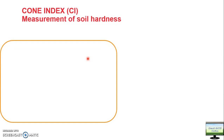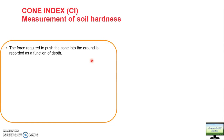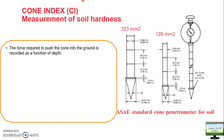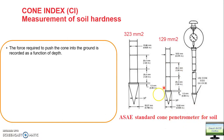Now we will move ahead to some extra concepts. The first concept is cone index. Cone index is basically the measurement of soil hardness — if cone index is less, the soil is soft; if it is high, the soil is hard. It is the force required to push a cone into the ground and is a function of depth. The instrument used is called a cone penetrometer, as shown in the figure from the ASABE standard — the American Society of Agriculture and Biological Engineers.